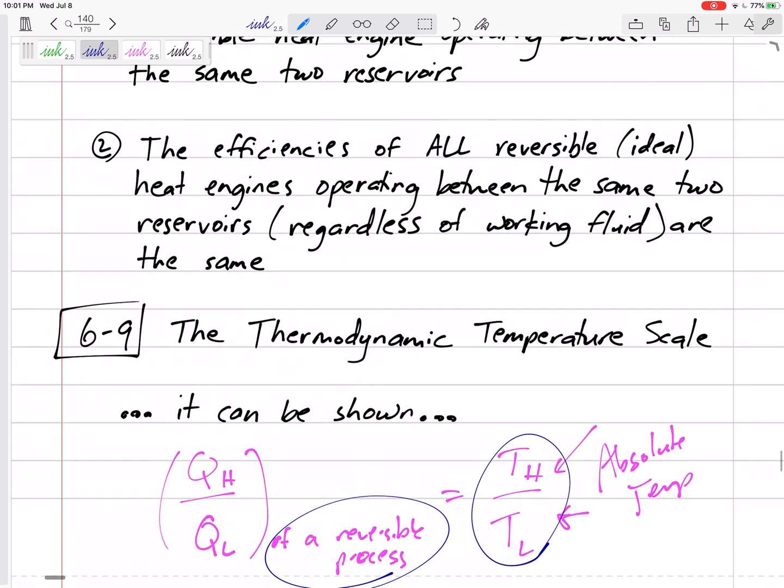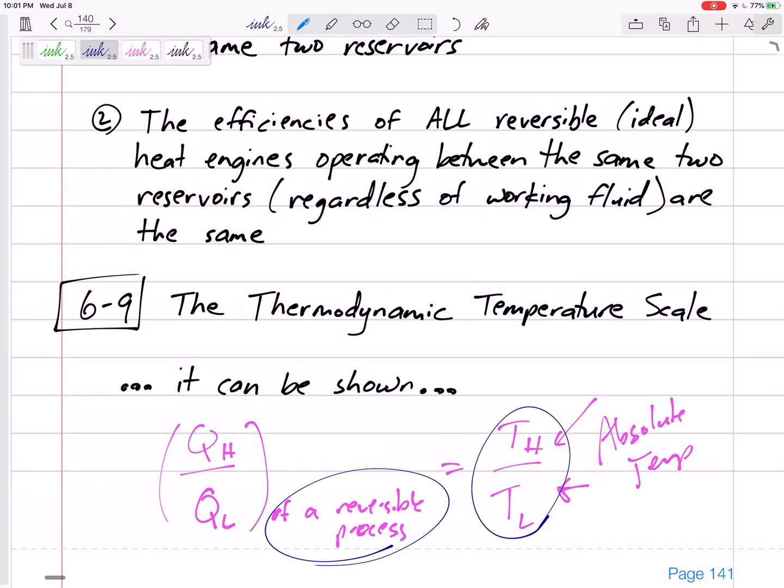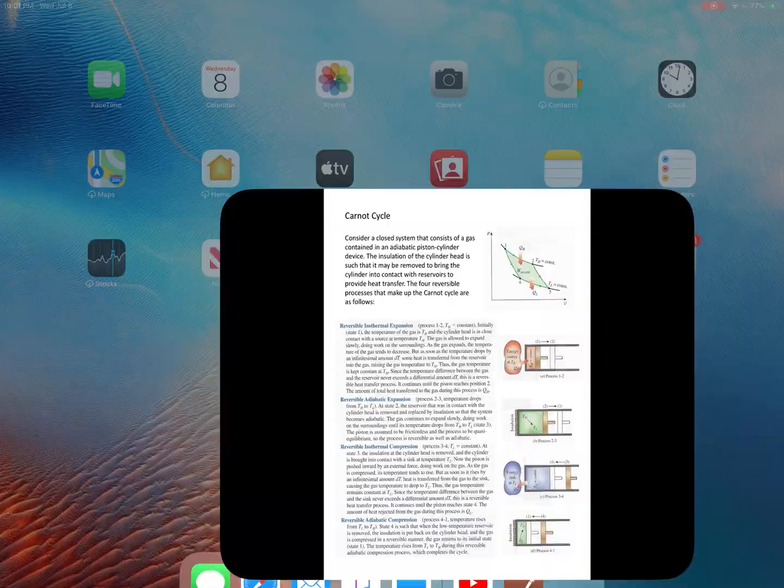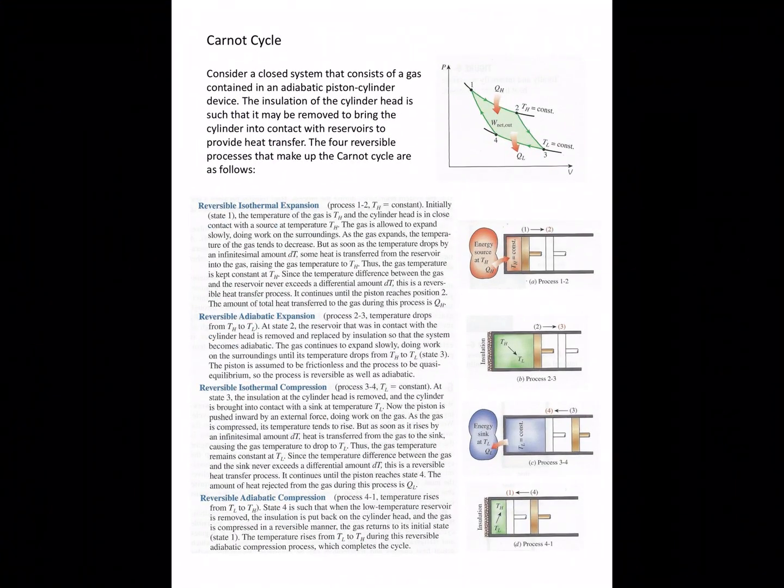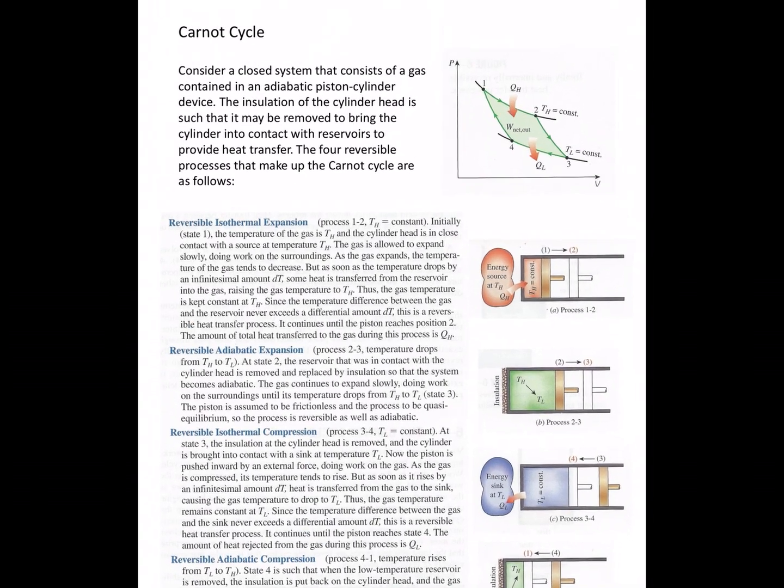Let me show you one page I put together. I think I pieced this together from the book. Maybe this is in the book, but I think I cut, chopped, and pasted this together. This is a Carnot cycle right here. This Carnot cycle has a lot of explanation.